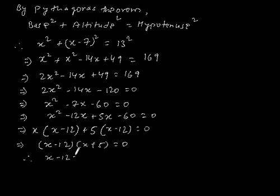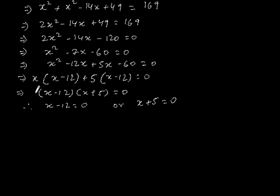Therefore, x-12 is equal to 0 or x plus 5 is equal to 0. That is x is equal to 12 or x is equal to minus 5.